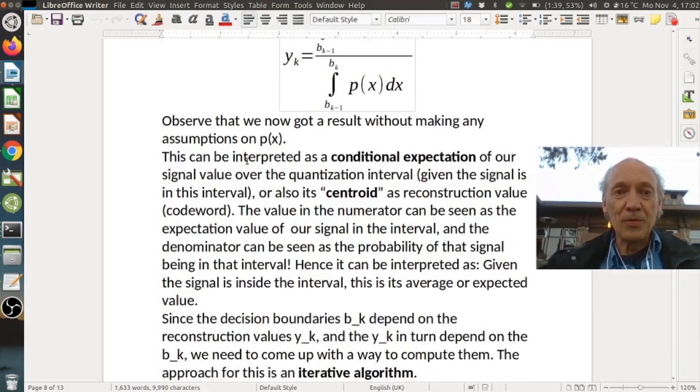This can be interpreted as a conditional expectation of our signal value over the quantization interval given the signal is in this interval, or it's also called the centroid as reconstruction value. Centroid because it's kind of the center of mass within this interval. We have this interval which might have a somewhat distributed signal probability and then the centroid is the center of mass in this interval.